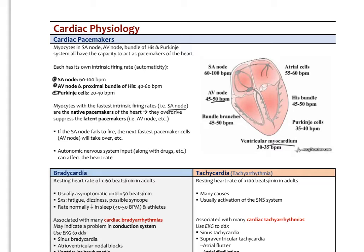Now the autonomic nervous system can regulate both the heart rate and the force of cardiac muscle contraction. The sympathetic nervous system secretes norepinephrine, which binds to beta-1 receptors, while the parasympathetic nervous system from the vagus nerve secretes acetylcholine, which binds to muscarinic receptors. The sympathetics will speed up the SA node above its natural firing rate of 100 beats per minute, while the parasympathetics will slow it down. Our autonomic nervous system is constantly speeding up or slowing down the heart.